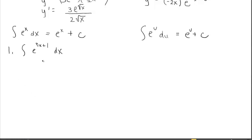Consider this first integral. It's not a reverse power rule — I don't have a base of x with a numeric exponent. When you see e, think: can I use u-substitution to rewrite this integrand and make it look exactly like the e-to-the-u formula? Let's try that approach.